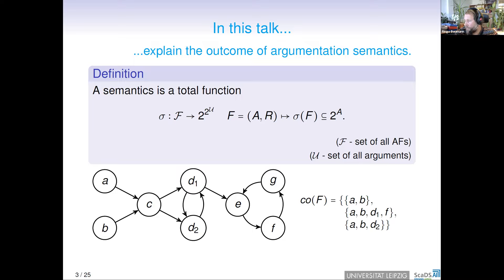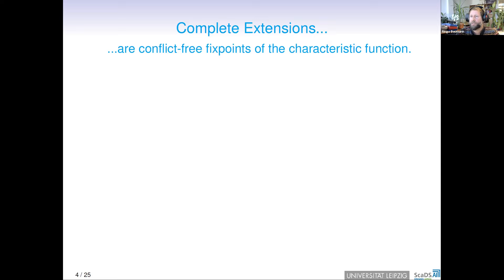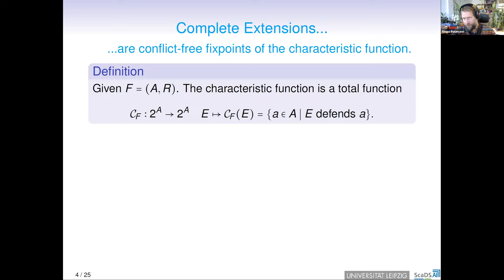The question is, how are these complete extensions defined? They are given as one characterization: conflict-free fixed points of the characteristic function. What is the characteristic function? This is a total function. You see here the definition. It takes as input a set of arguments and returns all arguments which are defended by this set. Defense means all attackers of an argument are counter-attacked. You can show that this function is monotonic, and then by Knaster-Tarski there are fixed points. You can iterate over the empty set, and iterating over the empty set always yields conflict-free sets.